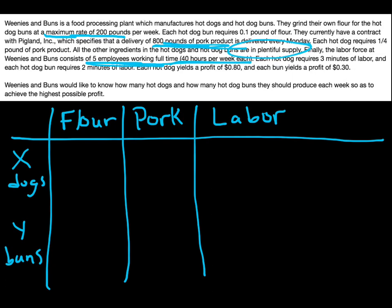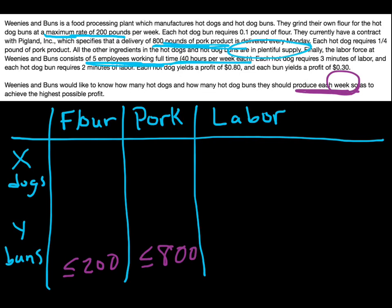At the bottom of each column, let me put what these restrictions are. Flour — we can only grind a maximum of 200 pounds per week. Note that you're being asked how many hot dogs and hot dog buns should be produced each week, so all of these numbers and variables are for one week. So flour is less than or equal to 200 pounds. Pork — only 800 pounds are delivered each week, so we can only use up to 800 pounds. And then finally labor — five employees working 40 hours each, that's 200 hours.